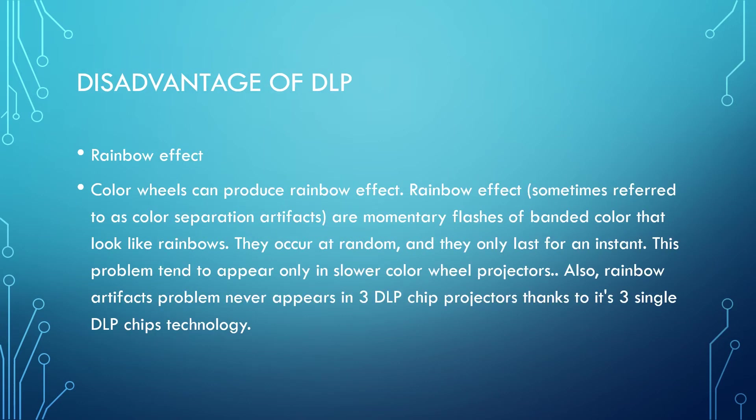The disadvantages of DLP are that they have rainbow effects. Color wheels can produce rainbow effects, referred to as color separation artifacts — momentary flashes of banded colors that look like rainbows. They occur at random and only last for an instant. The problem tends to appear only in slower color wheel projectors. Rainbow artifacts never appear in three DLP chip projectors, thanks to the three single DLP chip technology.